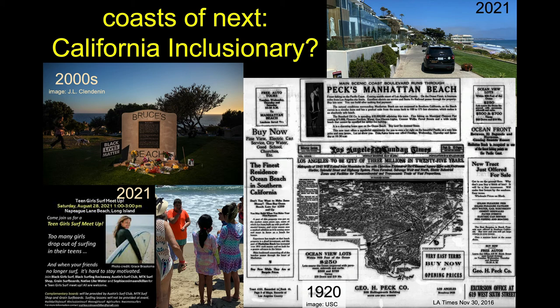This was an area originally purchased in 1912 by Willa Bruce and her husband. This part of LA County was not heavily occupied back in the early 1900s. They bought this land and turned it into essentially a hotel — a little resort where African Americans could come and hang out.